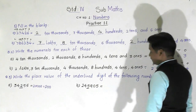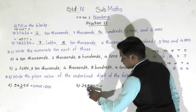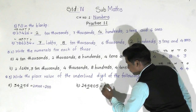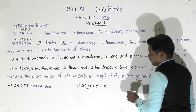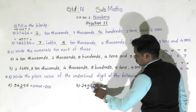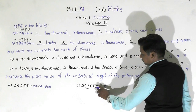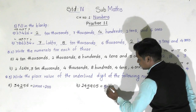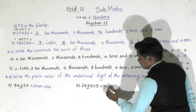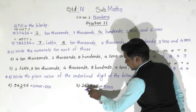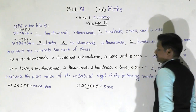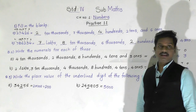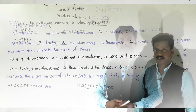Similarly, to find the place value of five: write five, then count the digits after five — there are three digits — so put three zeros after five. Since five is at the thousands place, the place value of five is five thousand.